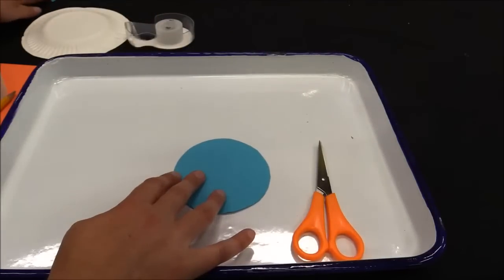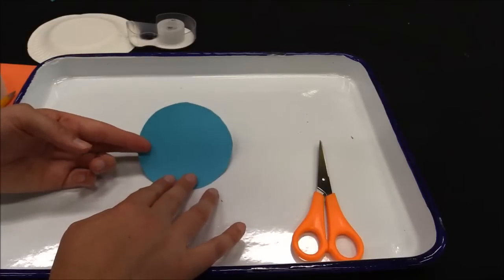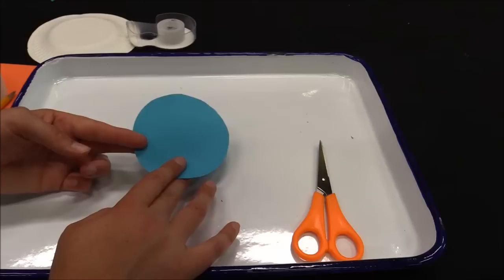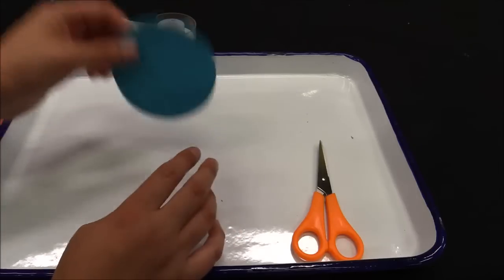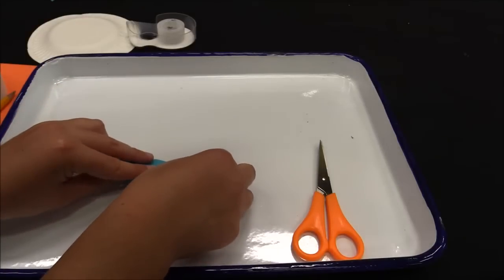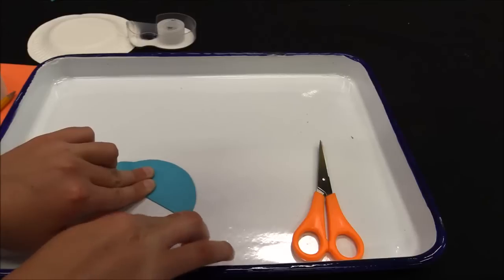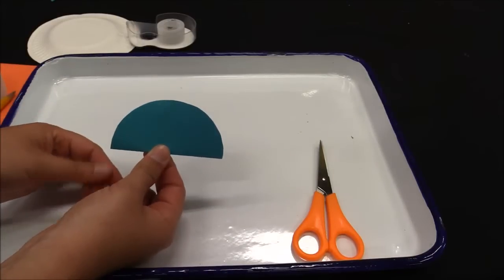Next what you're gonna do is you are gonna start making some careful folds as this circle is gonna become your sundial. The first thing we're gonna do is we are going to fold it in half as evenly as we can so it kind of looks like a taco.